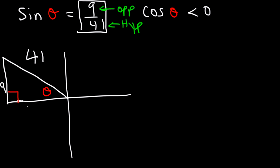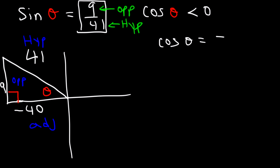This is the 9, 40, 41 triangle. Now that we have all three sides of the triangle, we can find the other values. X is going to be negative in quadrant 2, but Y is positive. Cosine theta is adjacent over hypotenuse. Negative 40 is the adjacent side. So cosine is going to be negative 40 divided by 41.